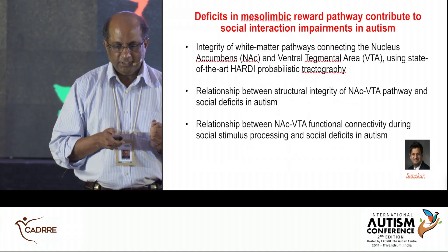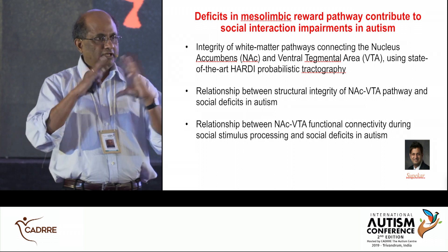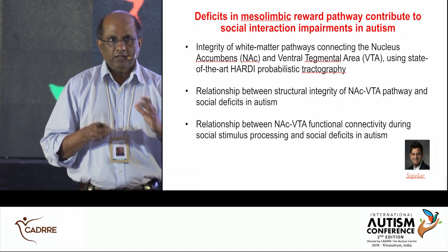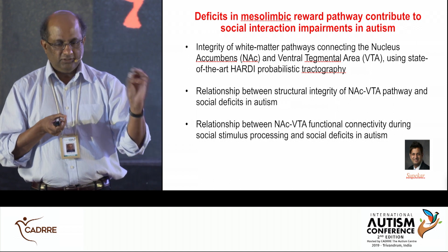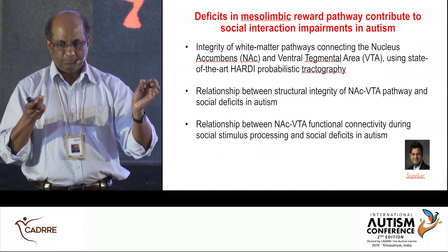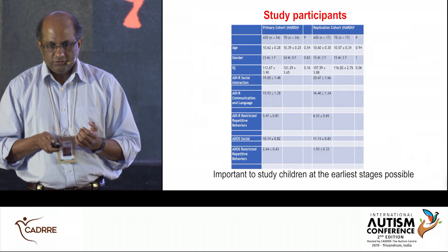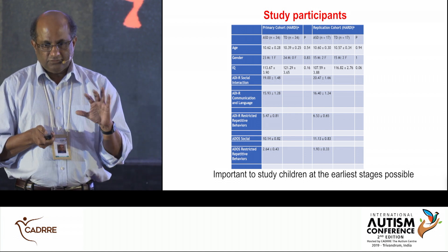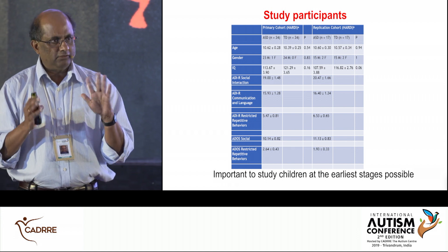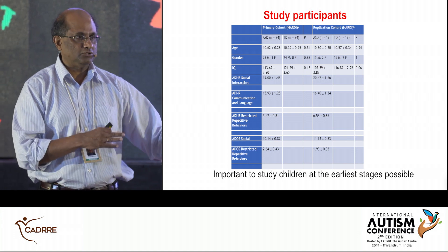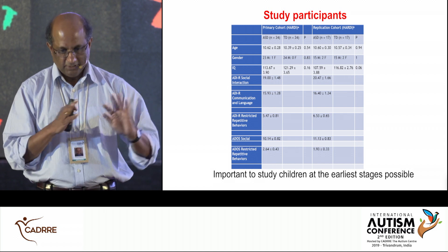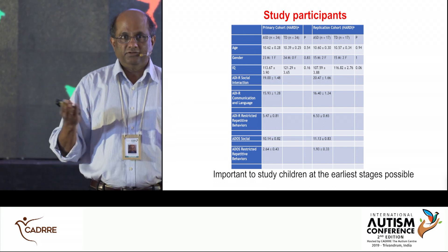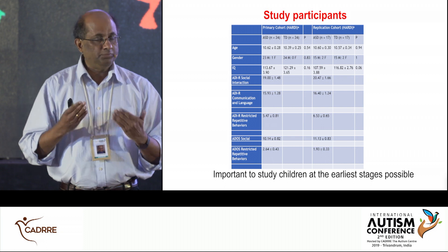The idea is that social communication is inherently rewarding and engages this system — perhaps this circuit is aberrant in children with autism. The study was led by Kostem Supekar in my lab. We took structural brain data and mapped out the structural links between the two areas that form the core reward pathway. Ideally we'd like to study children who are two and three years old, but we established deficits at age seven to nine when we can probe them.